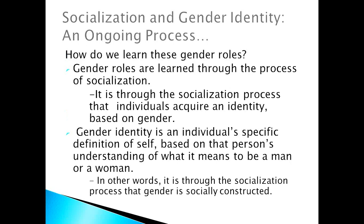How do we learn these gender roles? We are socialized through them. Gender roles are learned through the process of socialization, through which individuals acquire an identity. Gender identity is an individual's specific definition of the self — drawing on George Herbert Mead and symbolic interactionism — based on that person's understanding of what it means to be a man or a woman. In other words, through socialization, gender is socially constructed.